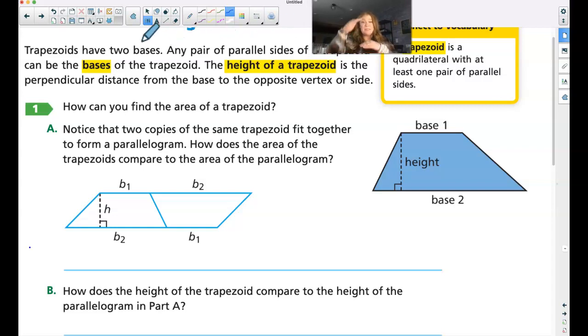Remember trapezoids have those two parallel bases and it can be any way. So the parallel can go this way, it can go up and down.